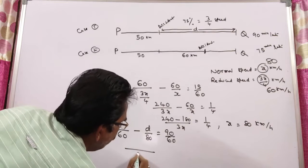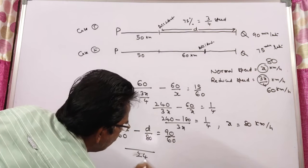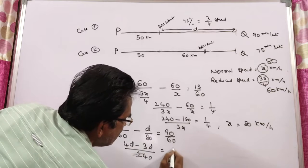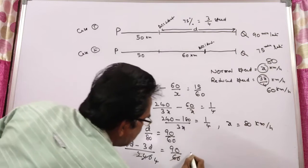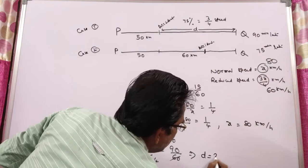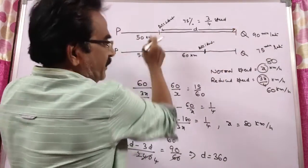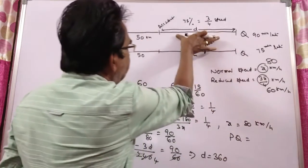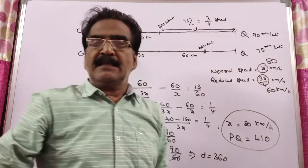Taking LCM as 240: 4D minus 3D divided by 240 equals 90/60, which gives D equals 360 kilometers. So the total distance PQ equals 360 plus 50, that is 410 kilometers. That is your answer friends.